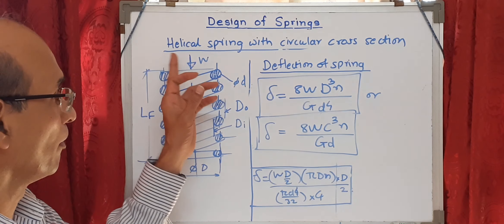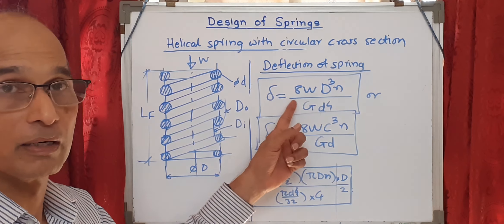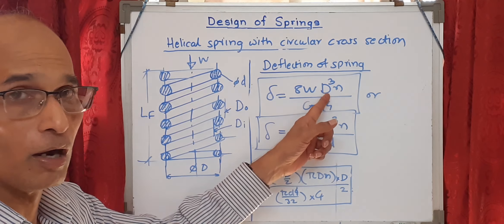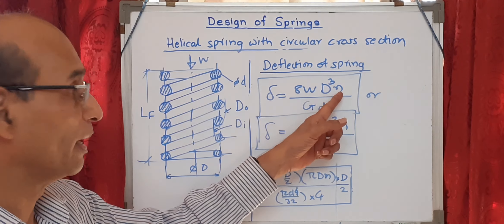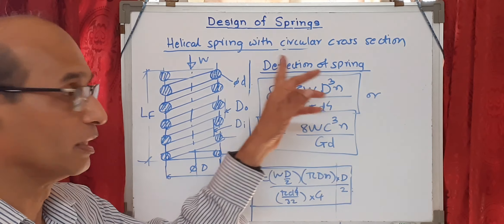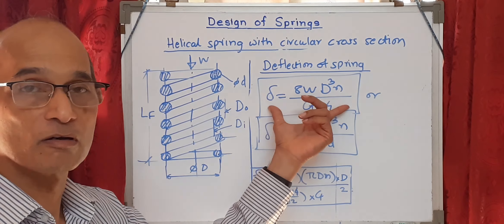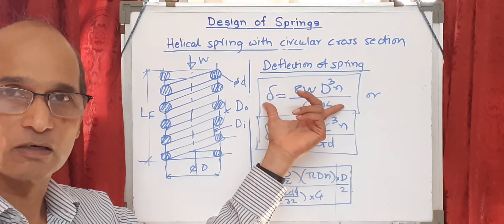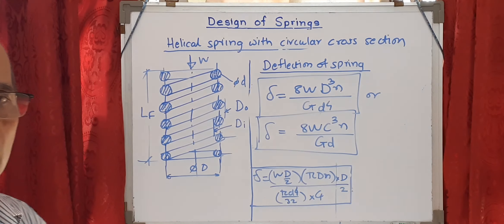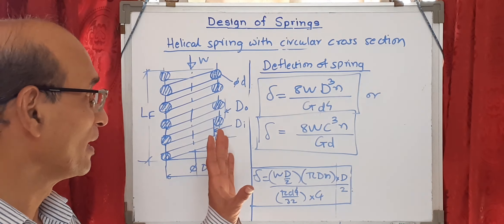This is the equation for deflection relating it to all the other parameters — load W, coil diameter D, wire diameter d, number of turns N, modulus of rigidity G, and spring index C. This becomes one more design equation used when designing this particular type of spring.